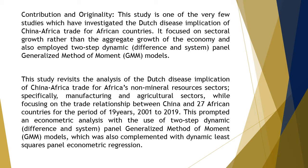This study revisits the analysis of the Dutch disease implication of China-Africa trade for Africa's non-mineral resource sectors, specifically manufacturing and agricultural sectors, while focusing on the trade relationship between China and 27 African countries for the period of 19 years, 2001–2019. This prompted an econometric analysis using two-step dynamic difference-in-system panel-generalized method of moment (GMM) models, complemented with dynamic least squares panel econometric regression.